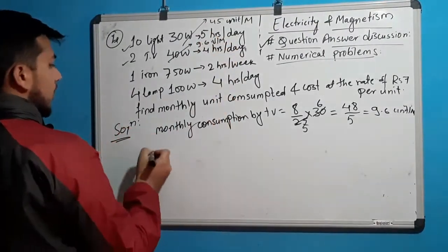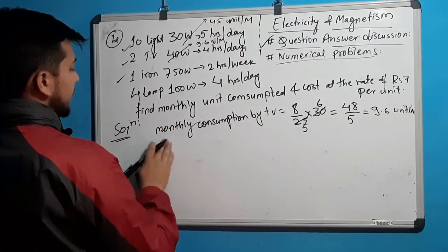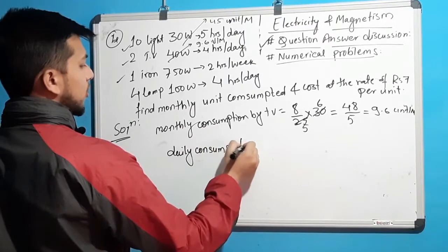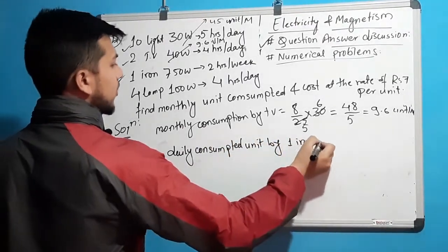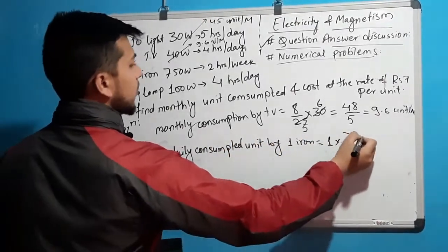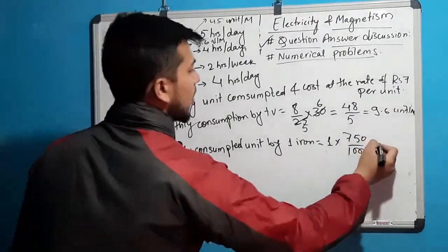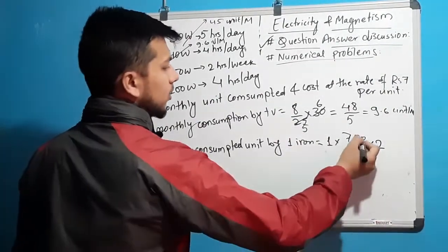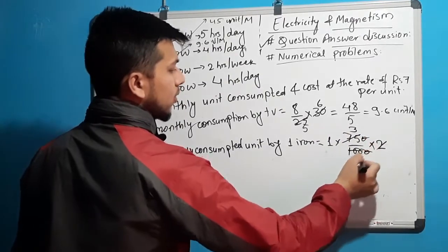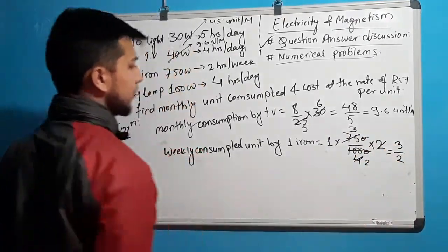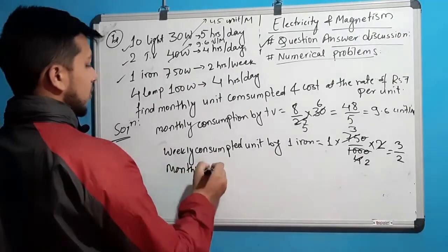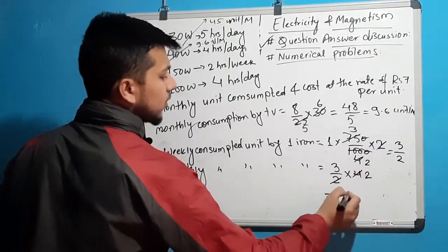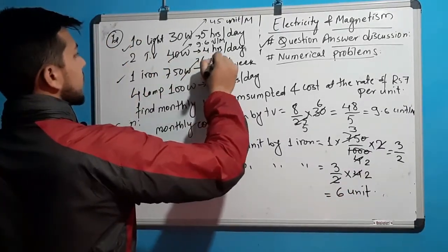For one iron: unit consumption per week equals 1 into 750 upon 1000 kilowatt into 2 hours equals 3 upon 2 units per week. Monthly consumption by one iron equals 3 upon 2 into 4 weeks equals 6 units per month.